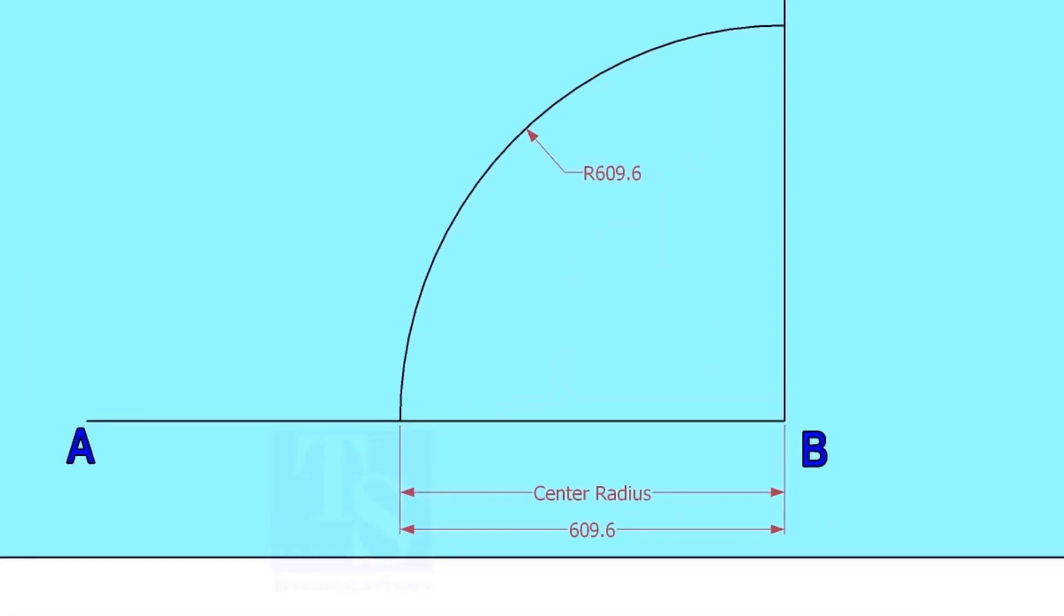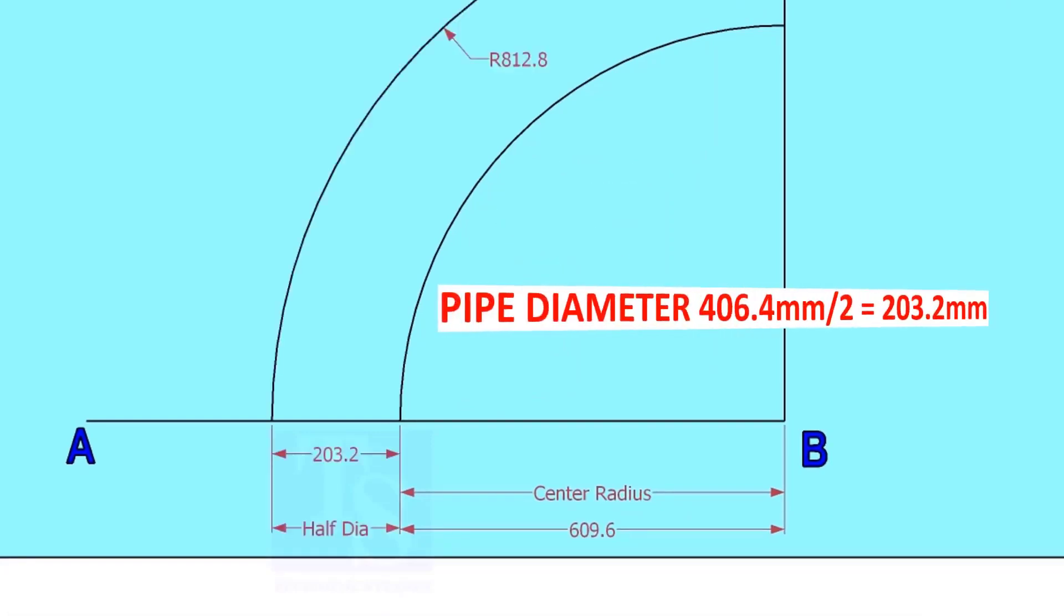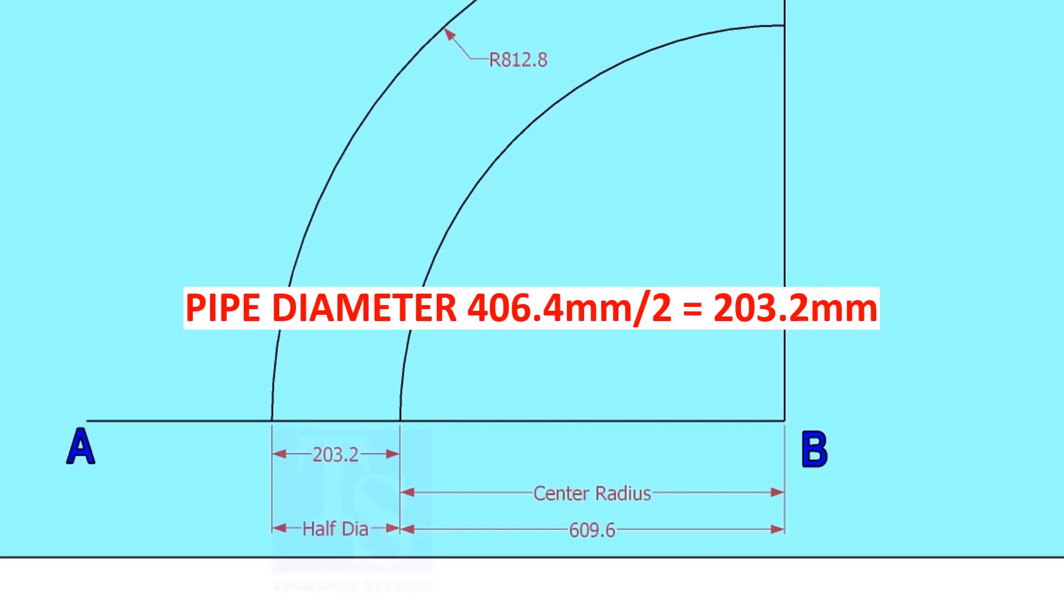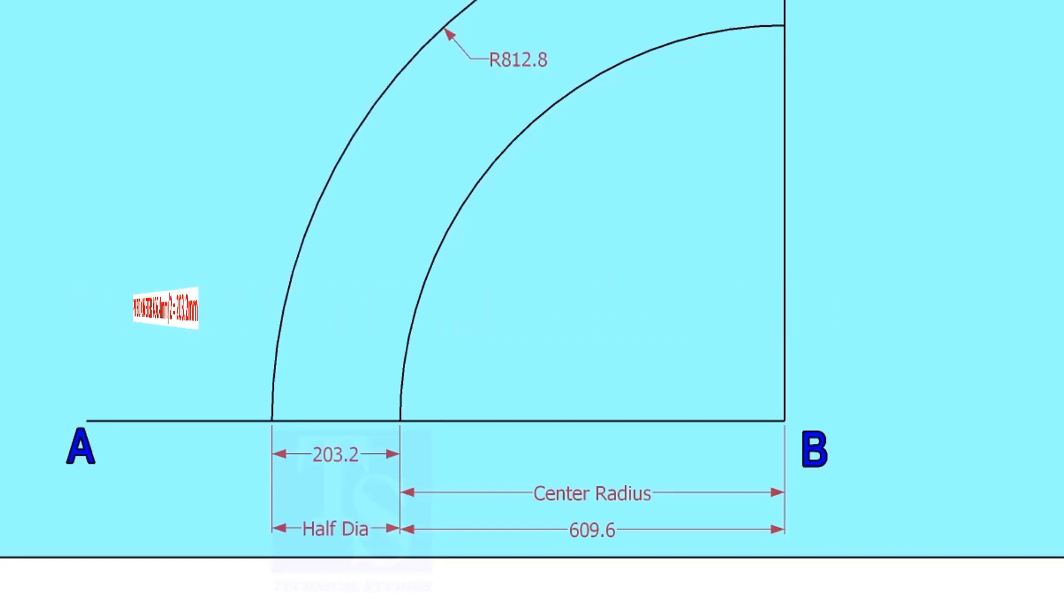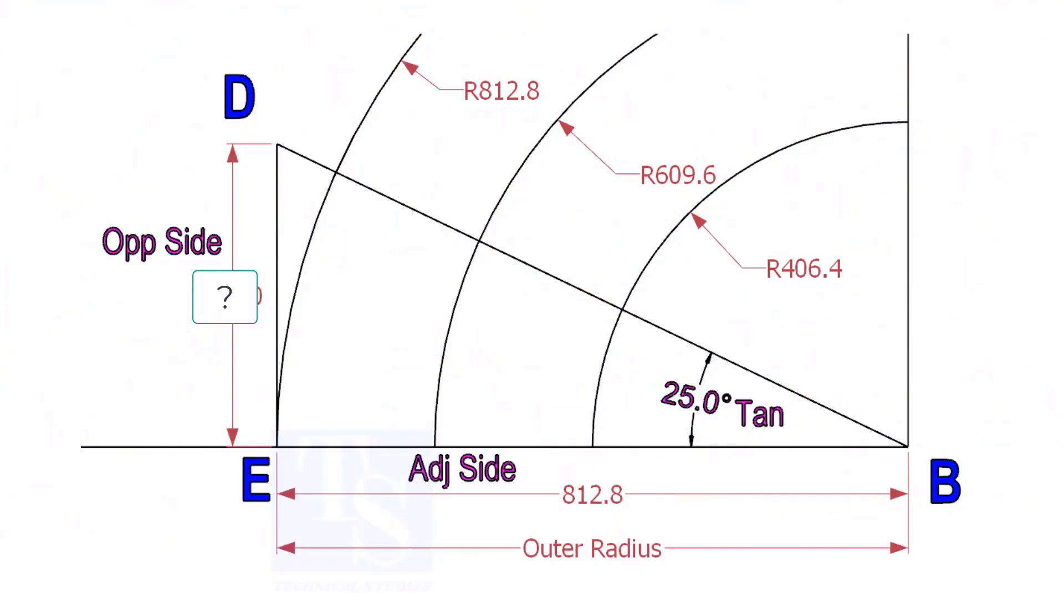Draw an arc with the center radius 609.6 millimeters. Mark the half OD arcs on both sides of the center line. Mark a line 25-degree rotated from the baseline AB.